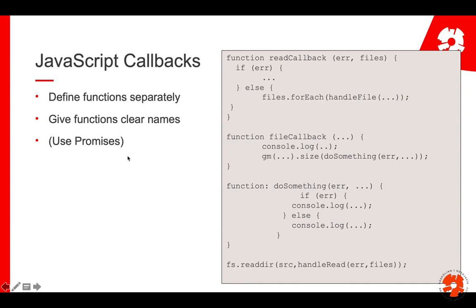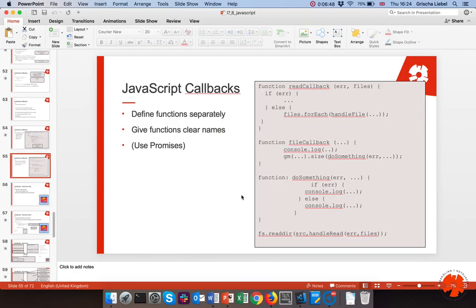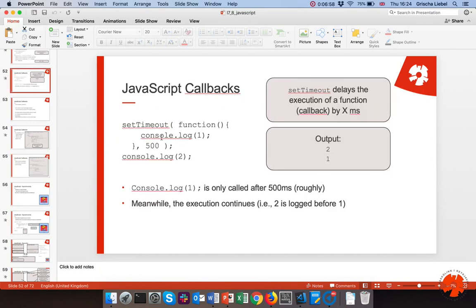Another option from ES6 onwards is promises, which have a bit of a more understandable structure, but we don't go into them in this course because they are a bit of an advanced concept. We might touch on them in the server-side JavaScript lectures. So this is the part on callbacks, and next we go into asynchronous execution in JavaScript. I've motivated the timeout a little bit and said that 2 is logged before 1 — but that's only half the truth. In reality there is a lot more behind how this is executed, and we'll cover that next.